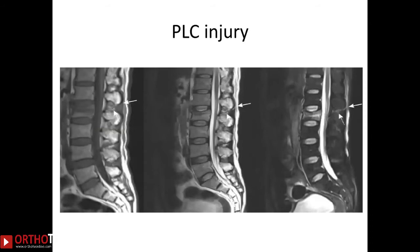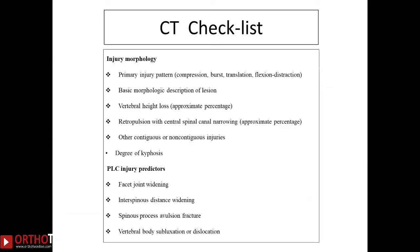The important thing is to assess the PLC injury on MRI, especially in burst fractures, to decide whether the injury is stable or unstable. PLC injury appears as a discontinuation of the supraspinous dark band on a T2 fat-suppressed or STIR image, with bright signal edema running through the PLC complex. This is why MRI is very important, especially when deciding the stability of the fracture.